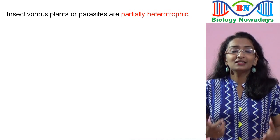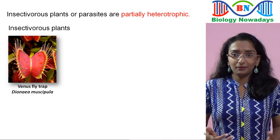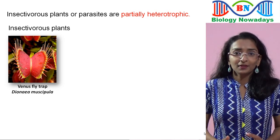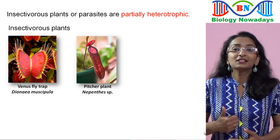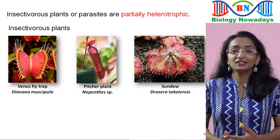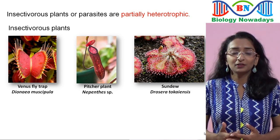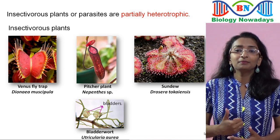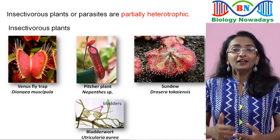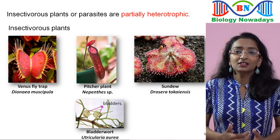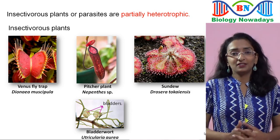Examples of insectivorous plants are the Venus flytrap, which uses snap traps to catch its prey; pitcher plants, which use pitfall traps; sundew plant, which uses stalked mucilaginous glands covering their leaf surfaces; and bladderwort, which uses vacuum-driven bladders to catch insect prey. They are adapted to live in soils poor in nitrogen, and insects are a rich source of nitrogen.